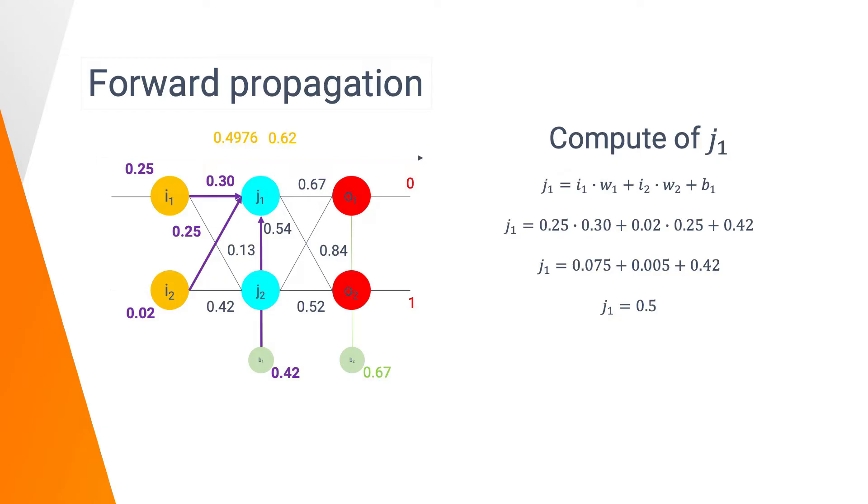But the work doesn't end here. 0.5 is the value for G1 in the network. But now, we need to calculate the value G1 will deliver to the rest of the network. To do so, most of you know that we are going to use what we call the activation function, in order to break the linearity of our neural network. We will use here the sigmoid function as our activation function. And we obtain as output for the neuron G1 0.62.